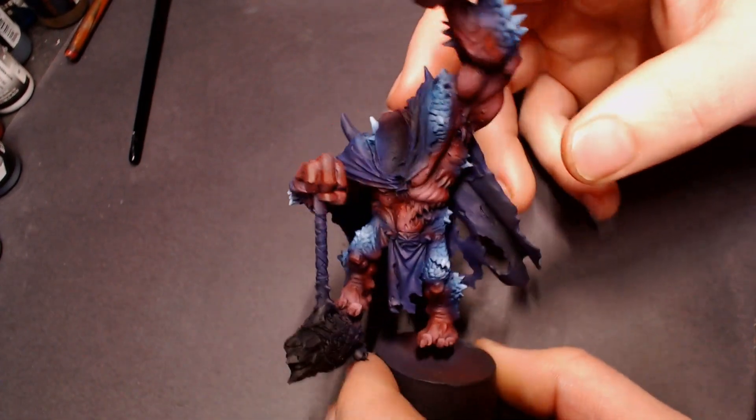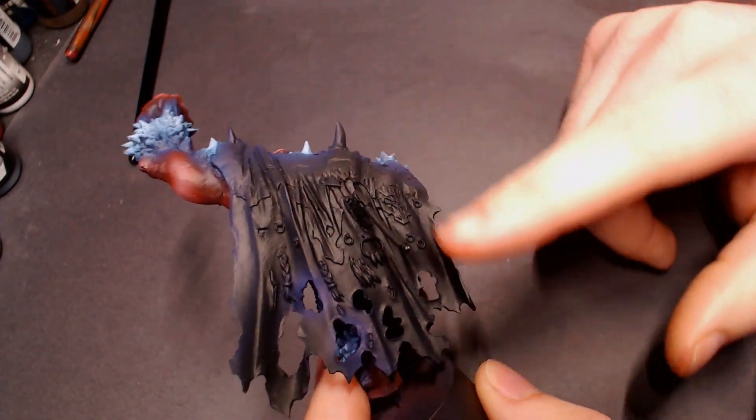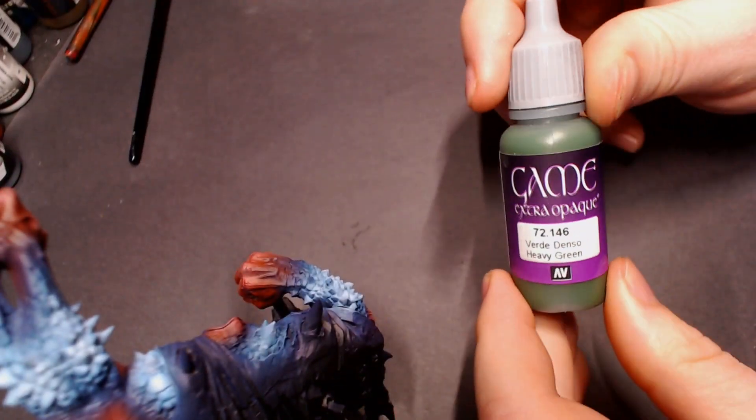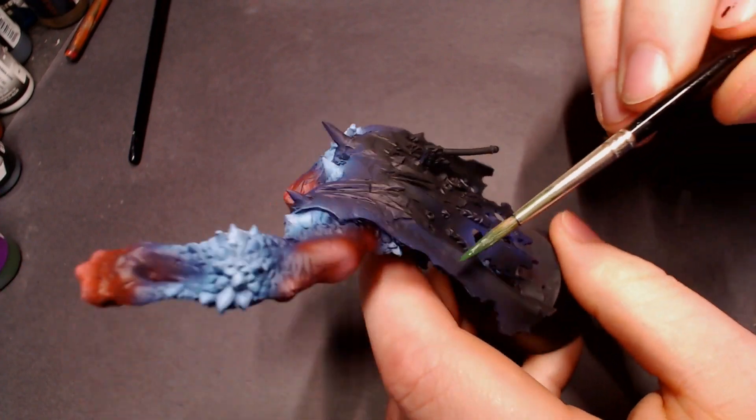Hey everybody, Jack Loves Painting here with another tutorial. I'm going to be doing an airbrush quickie today on Throg the Troll King's cape. I'm going to start off with some heavy green and just base out that entire cape by hand.